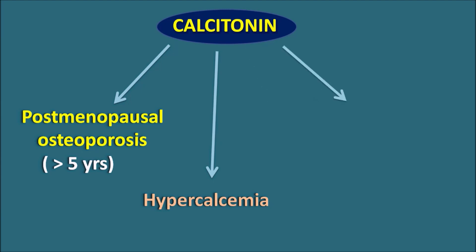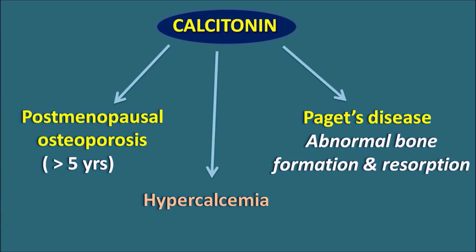This drug can also be used in Paget's disease. This is a physiological disorder in which bone formation is going to be accelerated — but abnormally accelerated — such that it produces abnormal bone formation as well as resorption, resulting in bone deformities, bone pain, and decreased bone strength. In such conditions, calcitonin can be given in order to prevent the demineralization of the bones.